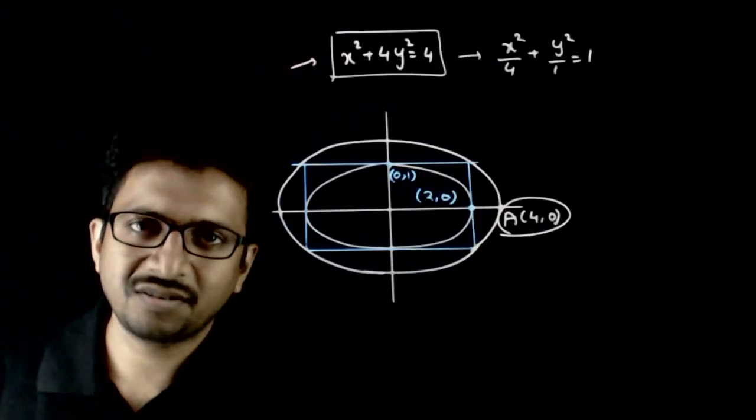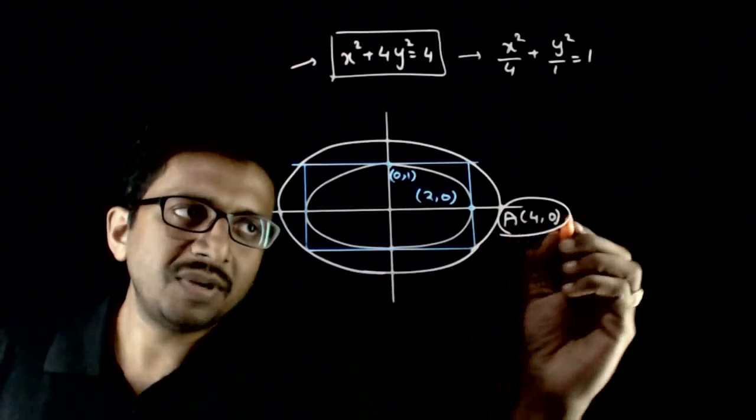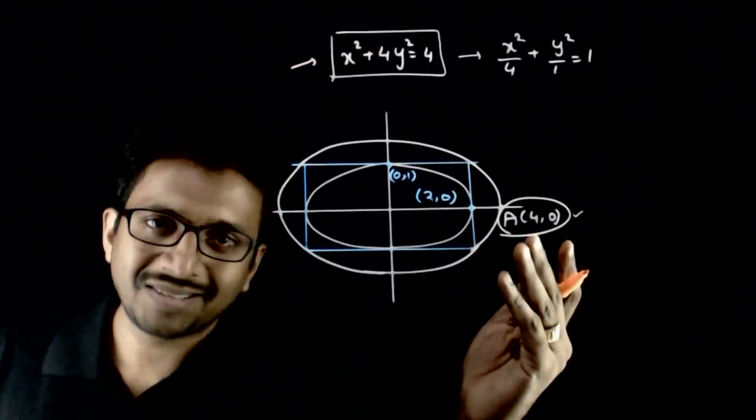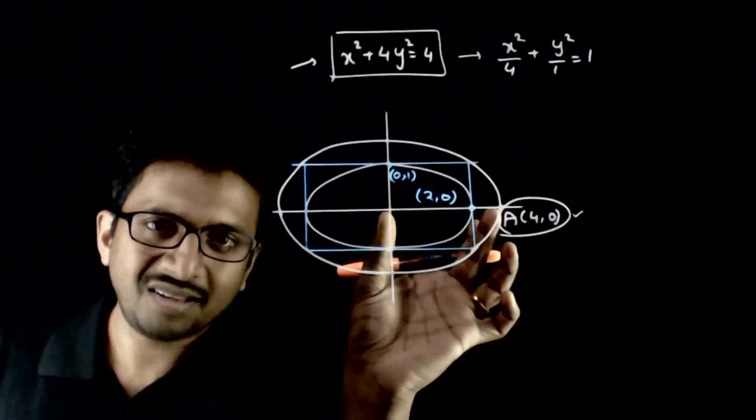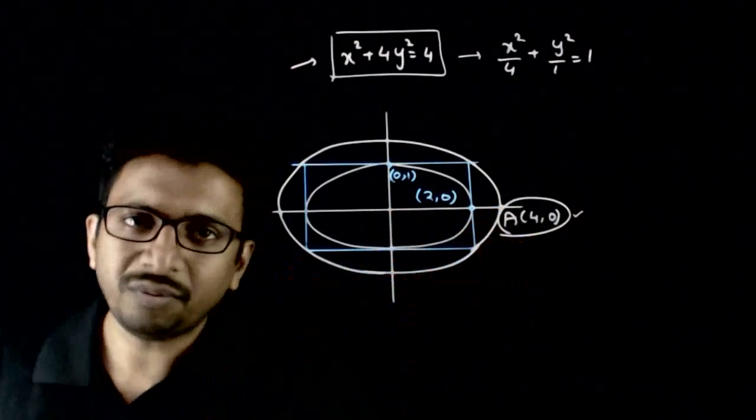So how do we get this? (4,0) is a point on the x-axis. That means the length of a for this particular ellipse is equal to 4.